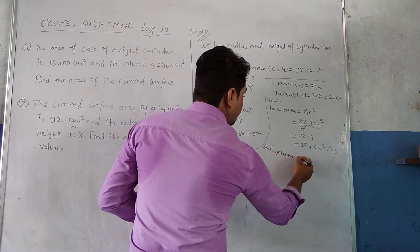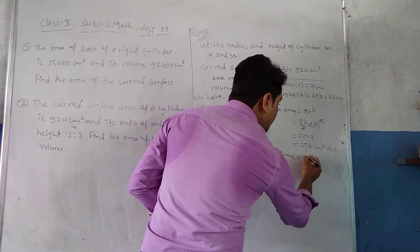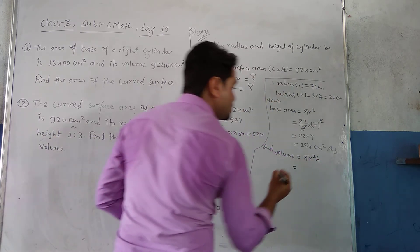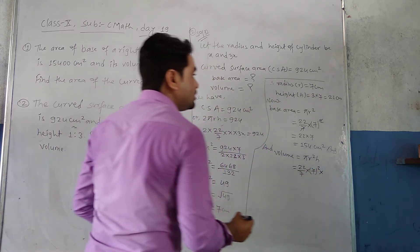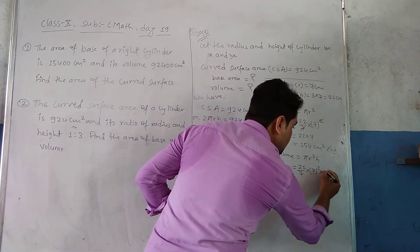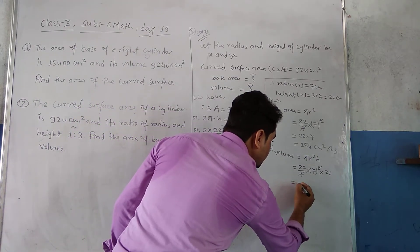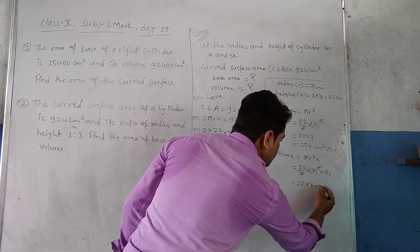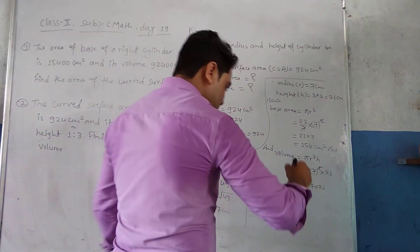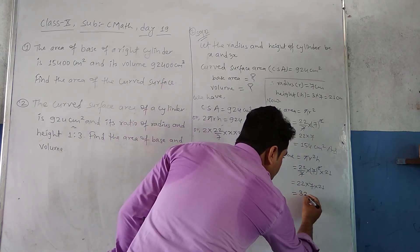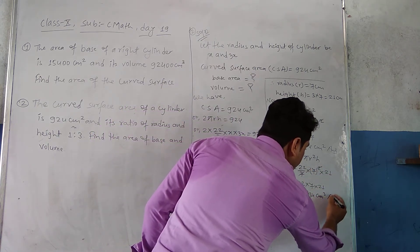Similarly, volume = πr²h = 22/7 × 7² × 21. The 7 in the denominator cancels with one factor of 7 in 49, leaving 22 × 7 × 21. Multiplying gives 3234 cm³. Since it is volume, the unit is cm³.